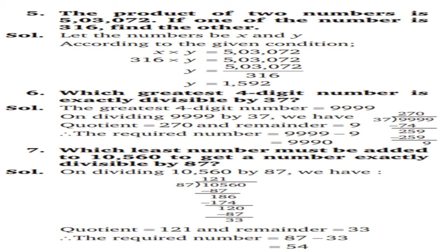Question number 6: which greatest 4-digit number is exactly divisible by 37? The greatest 4-digit number is 9,999. On dividing 9,999 by 37, quotient is 270 and remainder is 9. The required number is 9,999 − 9 = 9,990.